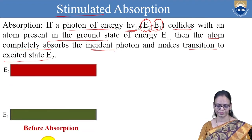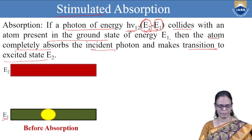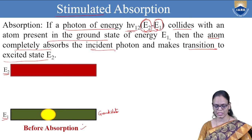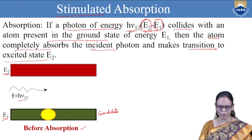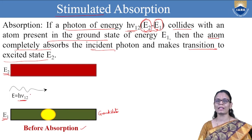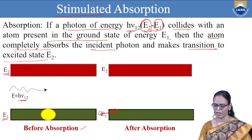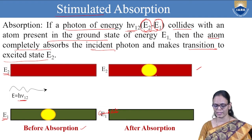Before absorption, E₁ is the energy of the ground state, E₂ is the energy of the excited state, and the atom is in the ground state. If this atom is supplied with energy equal to hν₁₂ — the difference between the two levels — then the atom will move from the ground state to the excited state E₂. This is what we call stimulated absorption.